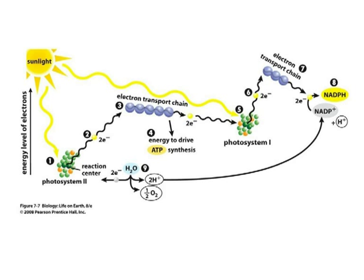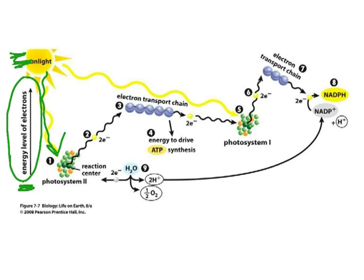This shows an overall schematic of the light-dependent, or light reactions, of photosynthesis. This side here represents the relative energy level of the electrons — electrons down here are relatively low energy, and electrons shown up here are a little bit higher in energy. Sunlight comes down and provides energy to the chlorophyll molecules and other pigments, which are found within photosystems. The first photosystem in the light reactions is photosystem 2.